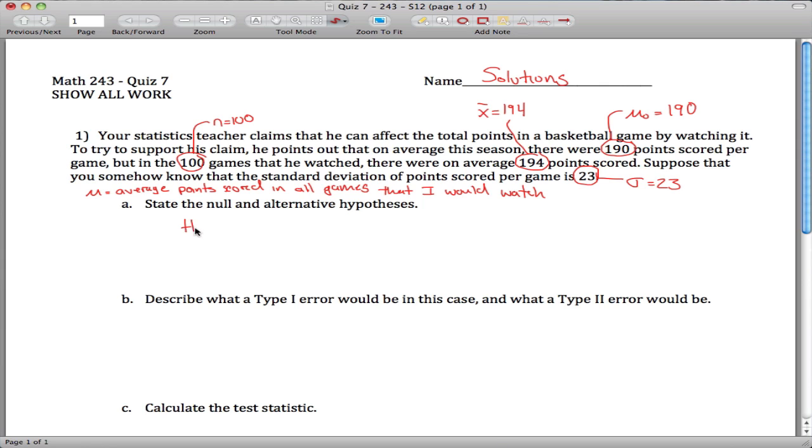State the null and alternative hypothesis. The null hypothesis is that mu, the average points scored per game in all games that I watch, is the exact same as mu naught. That is just 190. And the alternative hypothesis is that mu is not 190. Key point here that it's not equals to, not greater than, or maybe less than. We get that from this word here, affect. And this is telling us that it's a two-tailed test.